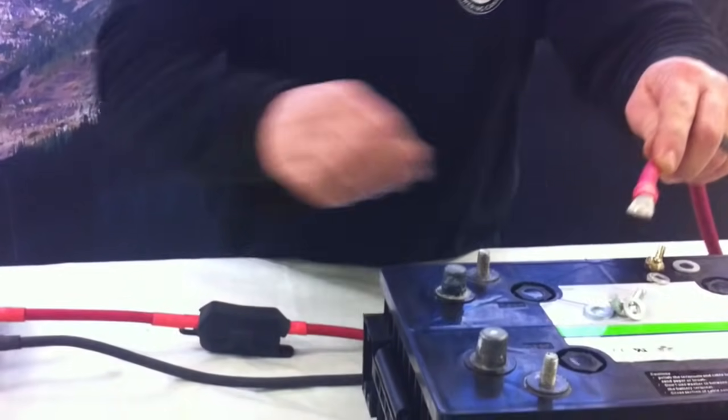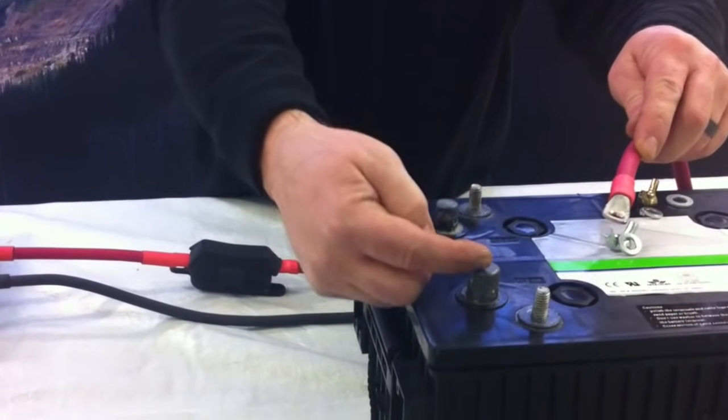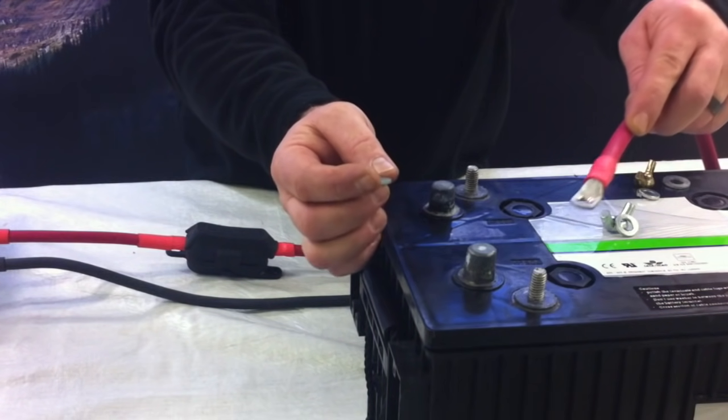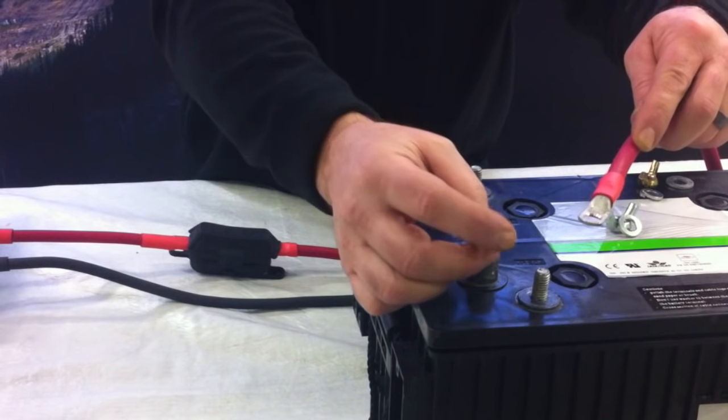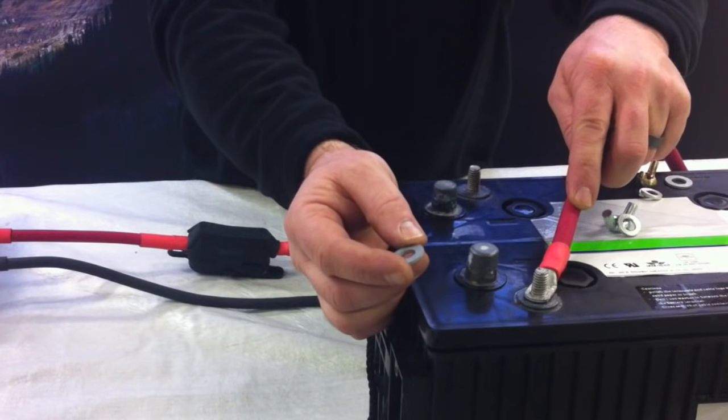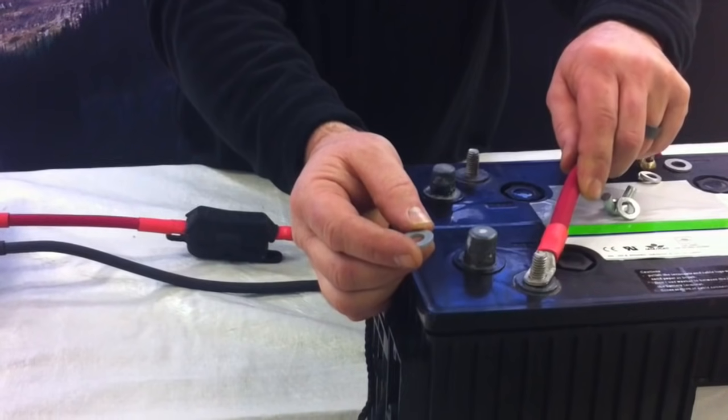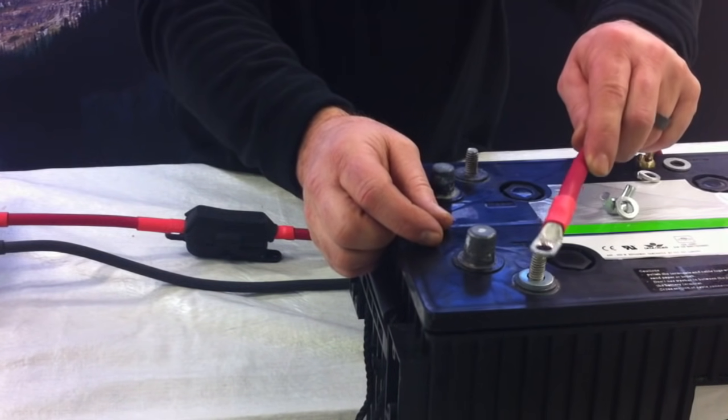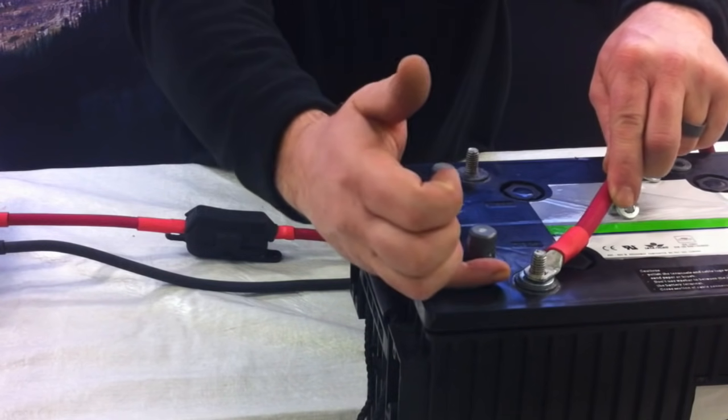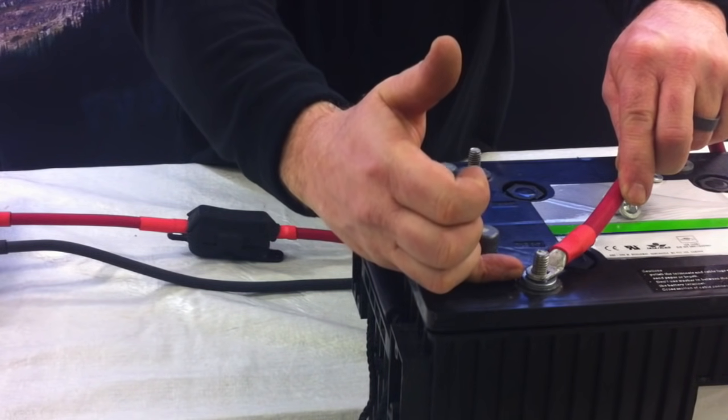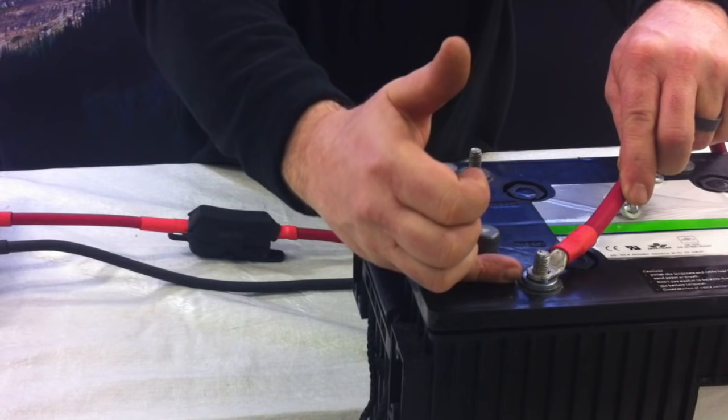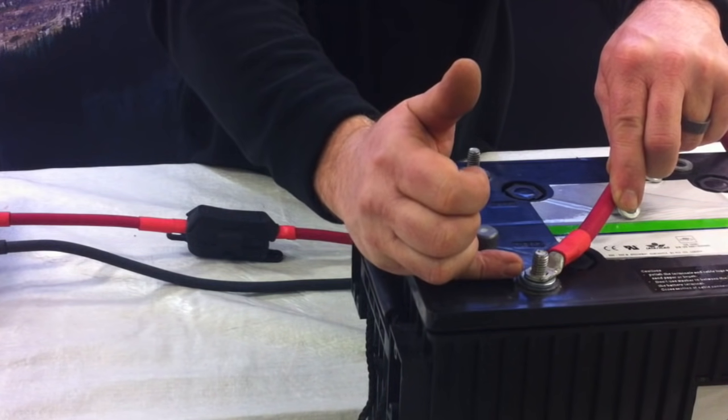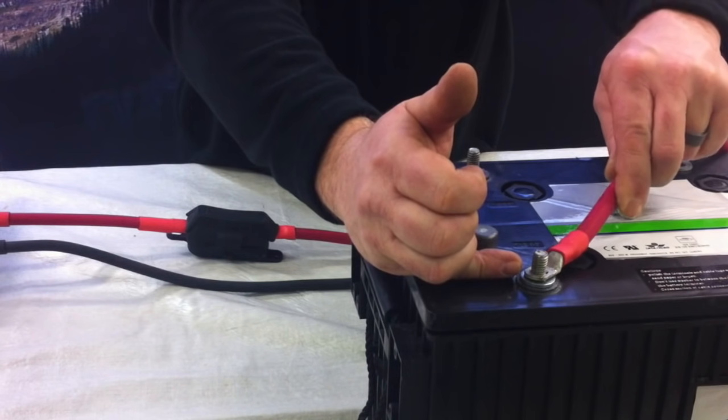So we're going to go ahead and put our positive cable on our positive terminal. One thing you want to make sure of depending on what hardware you get with a battery is that the lug goes on first and nothing goes in between the lug and the battery post. If in fact you were to put the washer down first and then the lug on top, what could happen is that the post will heat, the flat washer is going to set into the battery and you're going to end up with a loose connection and in turn you're going to end up burning the terminal in the battery.